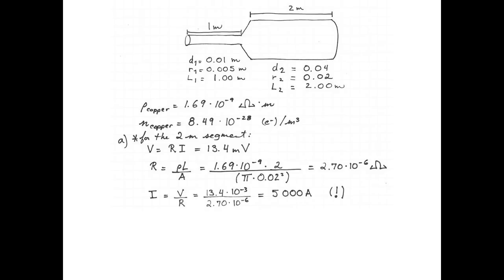Now that I have the resistance, I can find the current, which is simply voltage divided by resistance, 13.4 millivolts divided by 2.70 micro-ohms, which gives me 5,000 amperes.